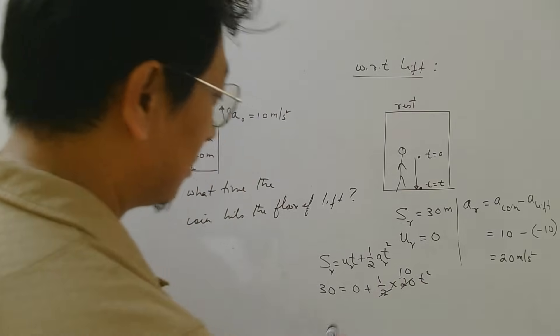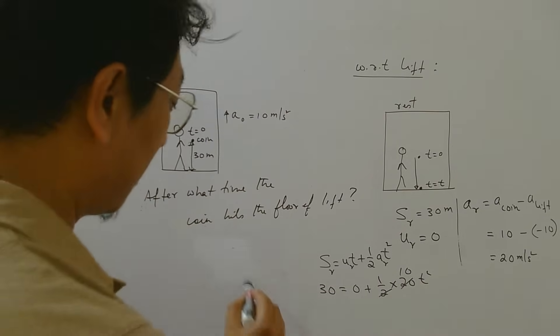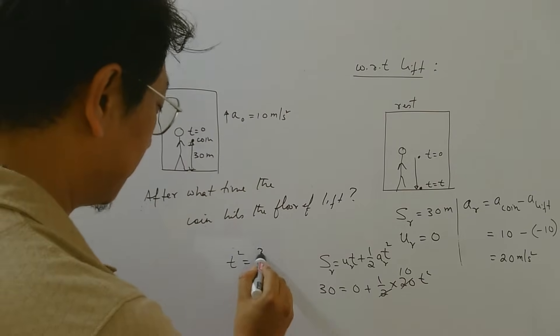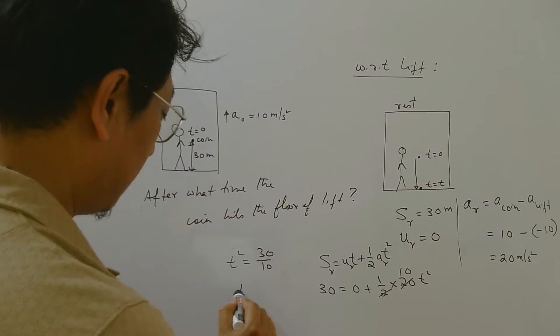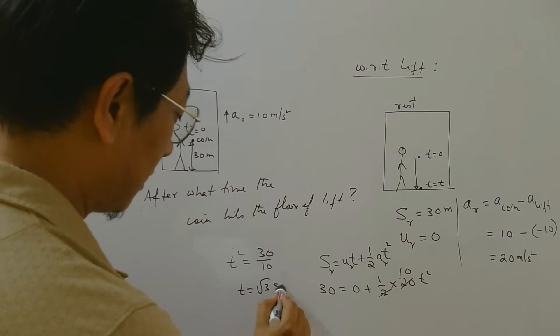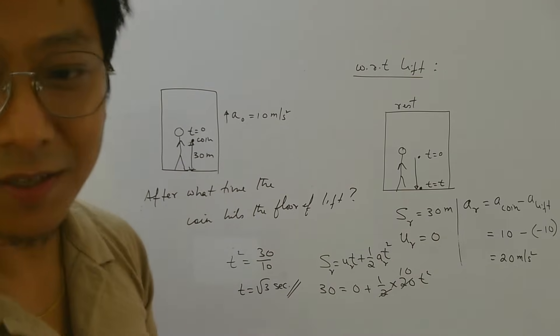So 2 tens are, so t square will be 30 by 10. So t will be root 3 seconds. So that would be the answer, right?